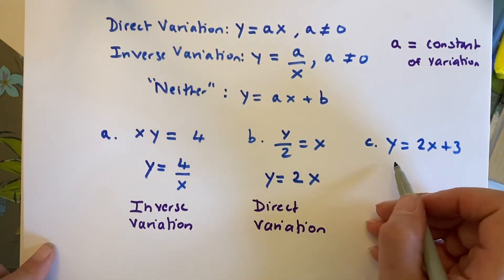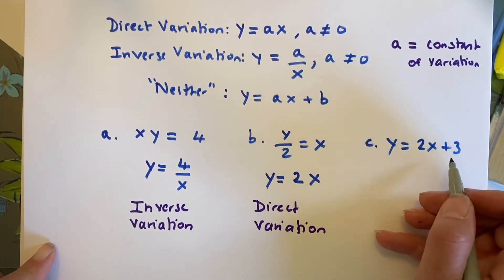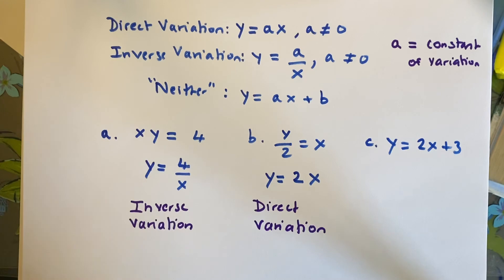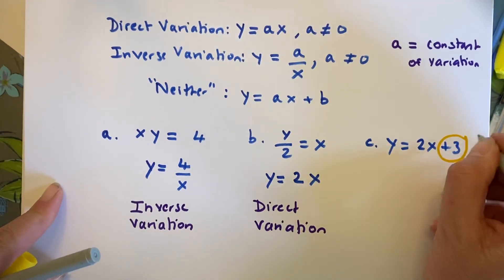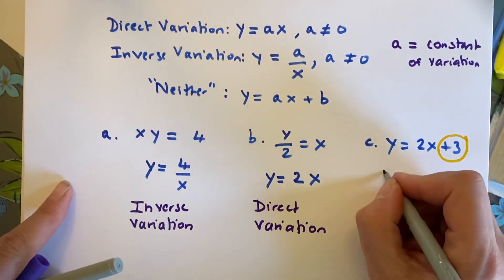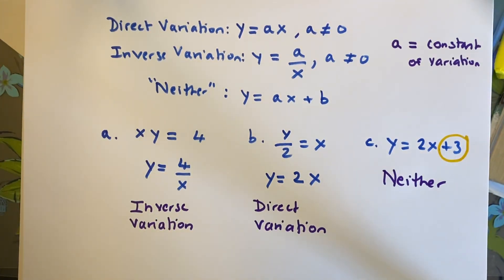Let's look at c. Well, c is y equals 2x plus 3. It's already in y equals form. But I have this problem in that it has this plus 3 here, which should not exist. And because of that, the answer to this has to be neither. Okay, so I'm going to have you do guided practice 1 through 4. And I am going to stop the video. And when I come back, I'm going to show you, just go through the answers very quickly for you before going through the next portion.